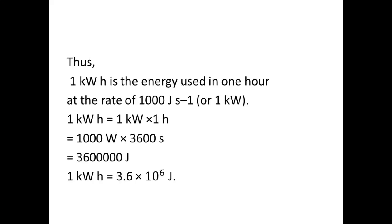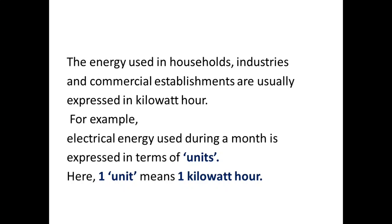1 kilowatt hour is the energy used in 1 hour at the rate of 1000 Joules per second. 1 kilowatt hour equals 1000 Watts into 3600 seconds, so 3,600,000 Joules, or 3.6 times 10 to the power 6 Joules. The energy used in households, industries, and commercial establishments are usually expressed in kilowatt hours.